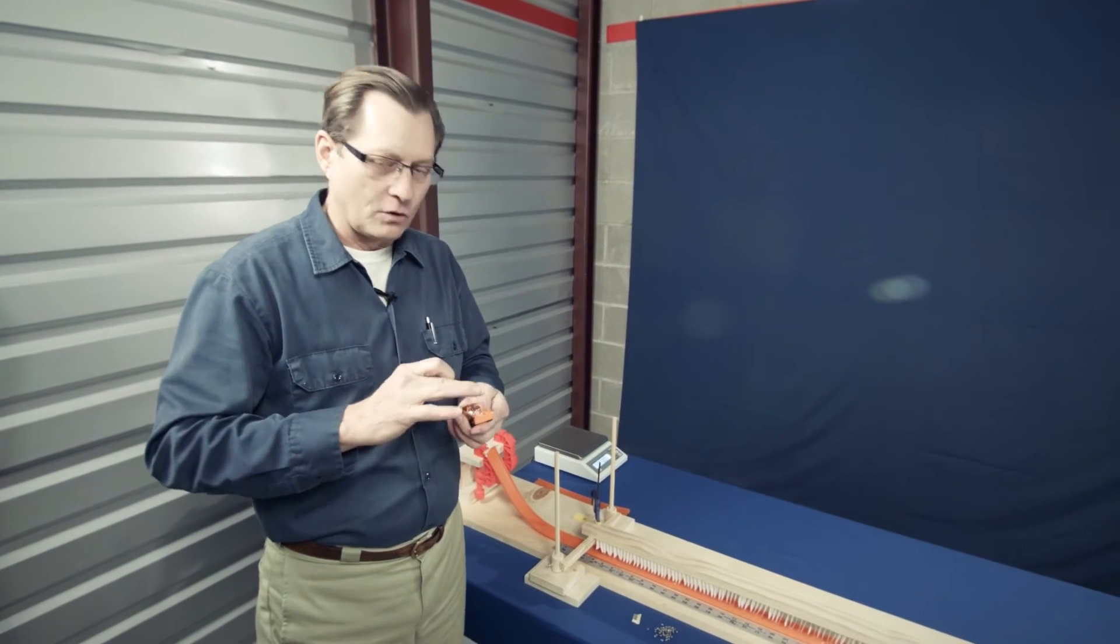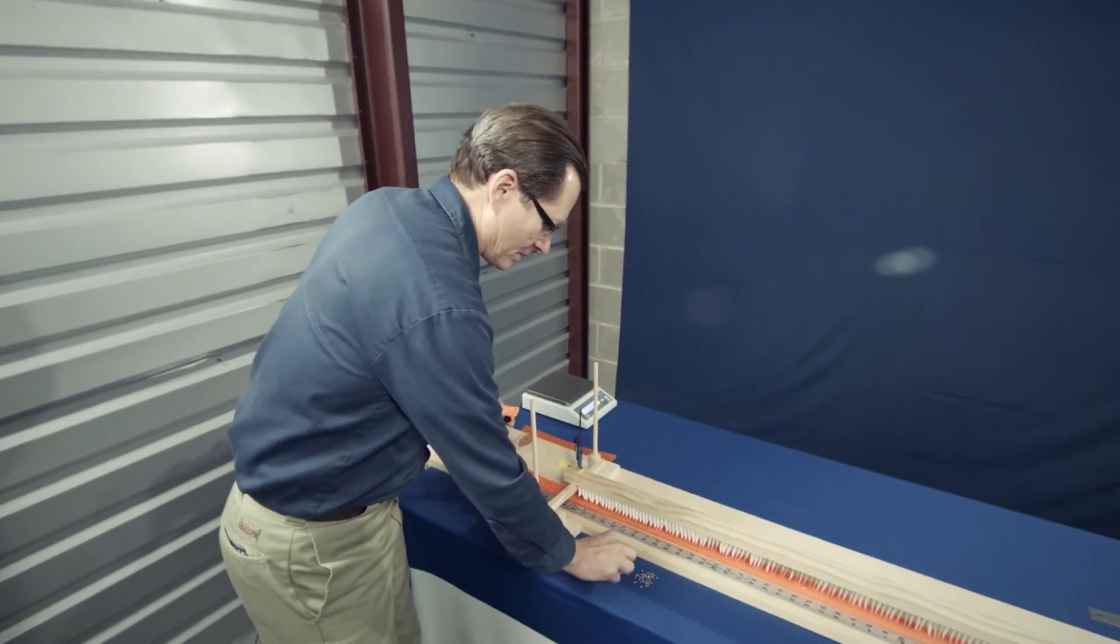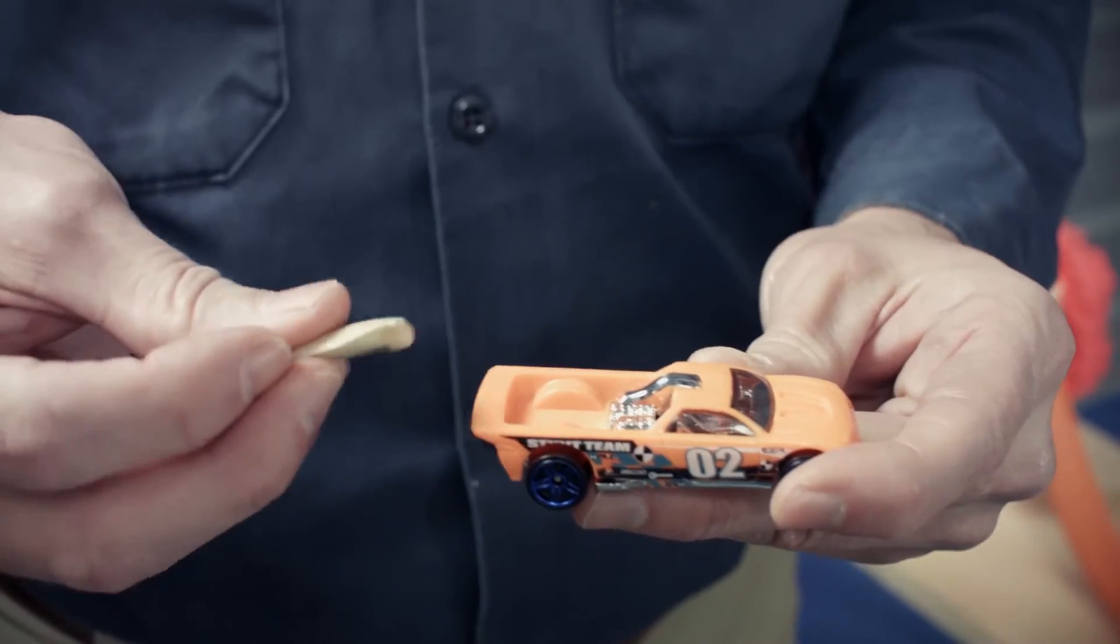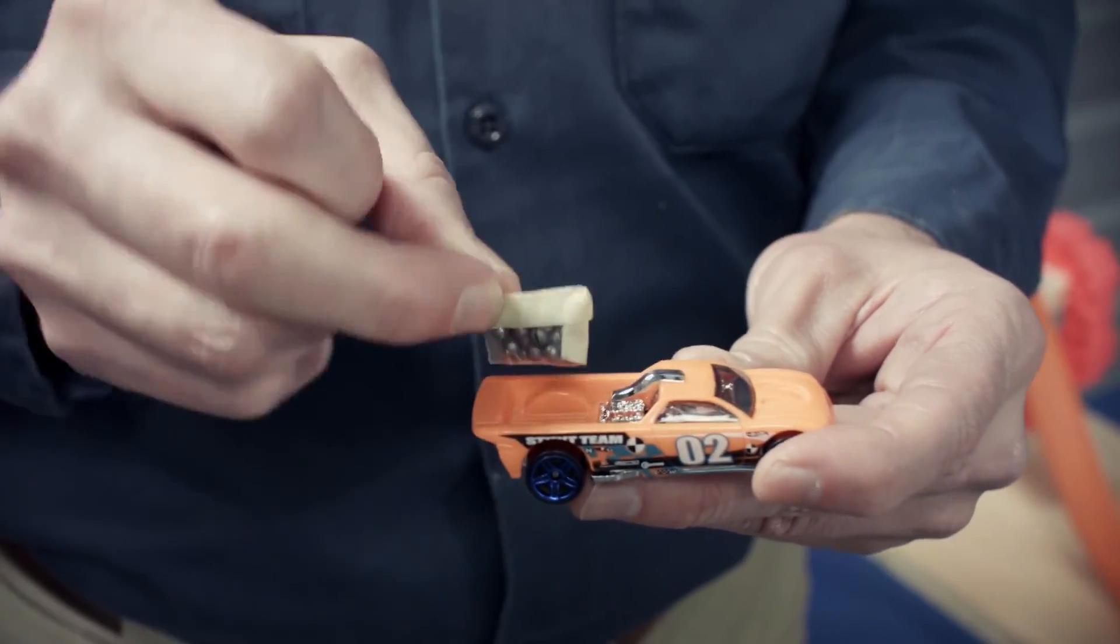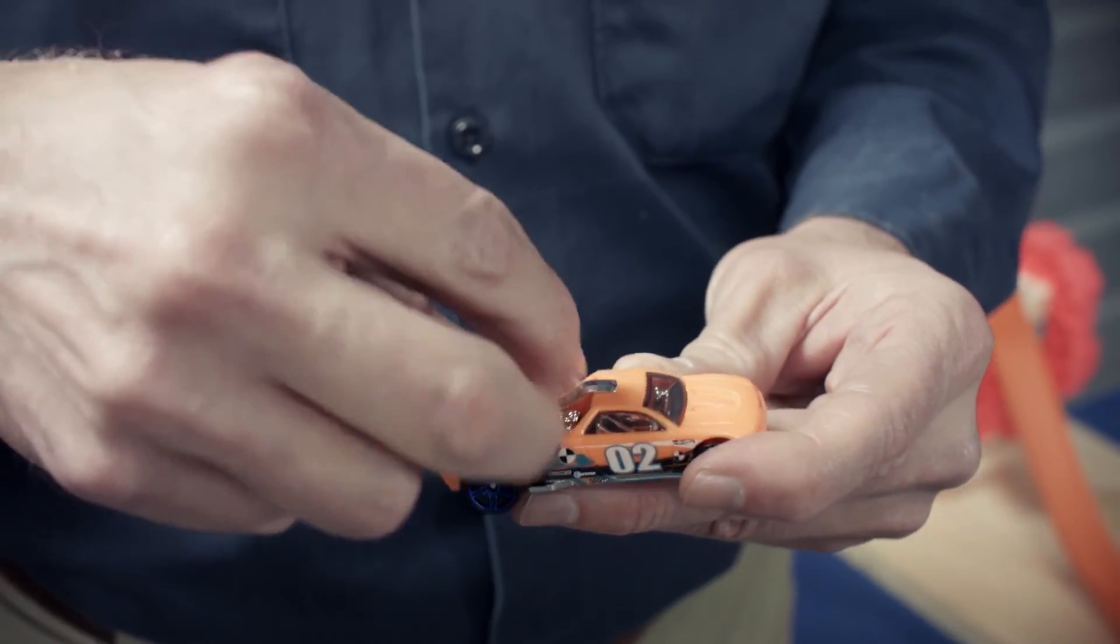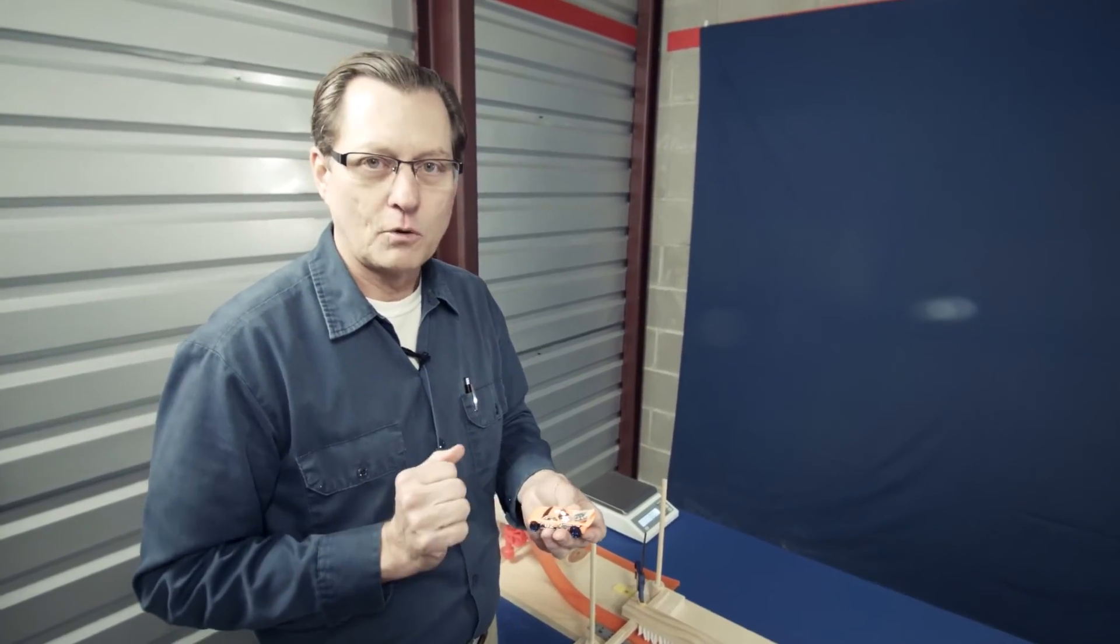After you get several weights in there, sometimes they may want to fall out, so it's kind of handy to take 10 or 12 of them and make a little pack out of them and tape it together. That way, when you get weights up to about 10, then you can just put this in the car and they won't be falling out.